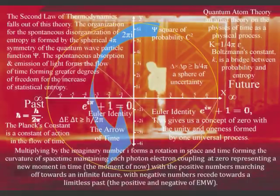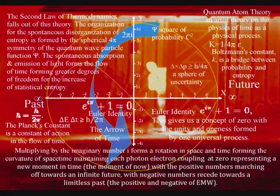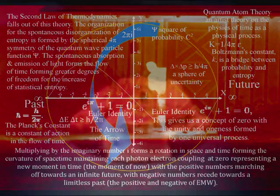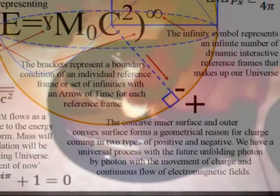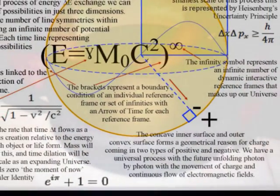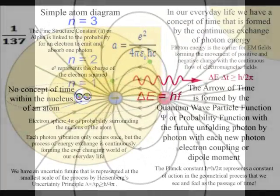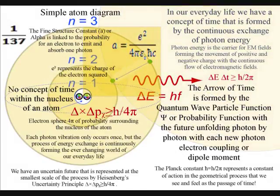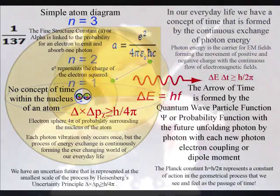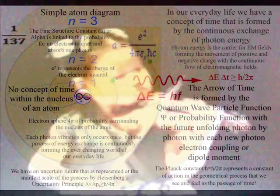The Riemann surface is a real two-dimensional manifold, or what I like to call a boundary condition. This dynamic two-dimensional surface forms the conditions for the holographic principle, in a similar way to images of two hyperbolic mirrors forming a hologram. In our everyday life, this two-dimensional surface is represented by the movement of positive and negative charge, with the inner concave surface representing negative charge and the outer convex surface representing positive charge. The light photon of quantum mechanics forms the movement of charge with the continuous flow of electromagnetic fields in three-dimensional space. In this theory, this represents an emergent probabilistic process unfolding with each photon vibration, relative to the atoms of the periodic table and the wavelength of the electromagnetic spectrum.